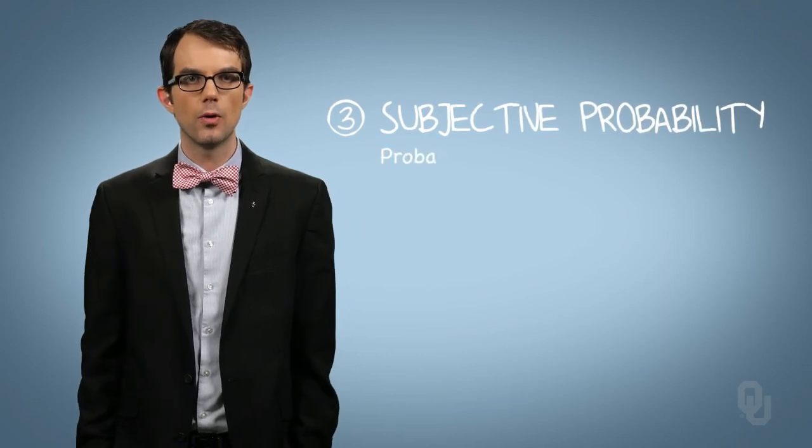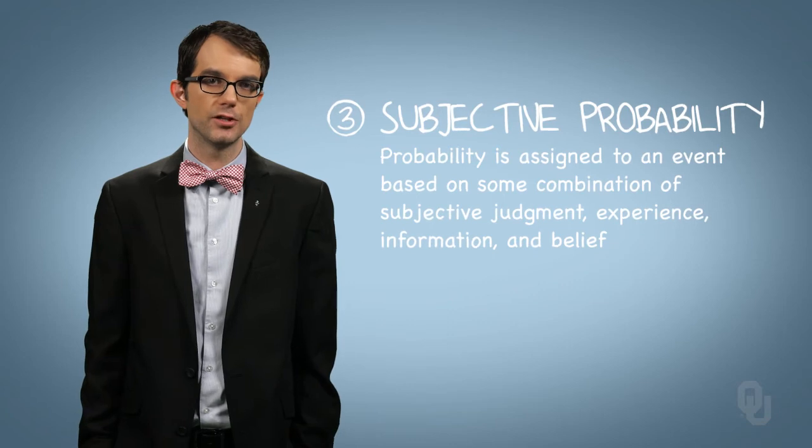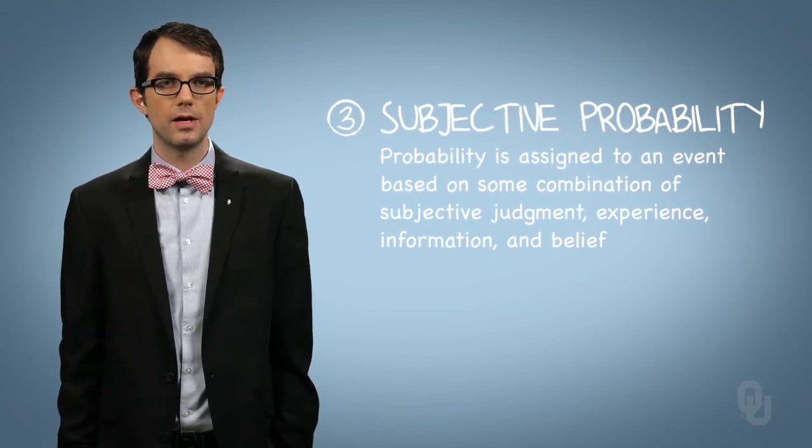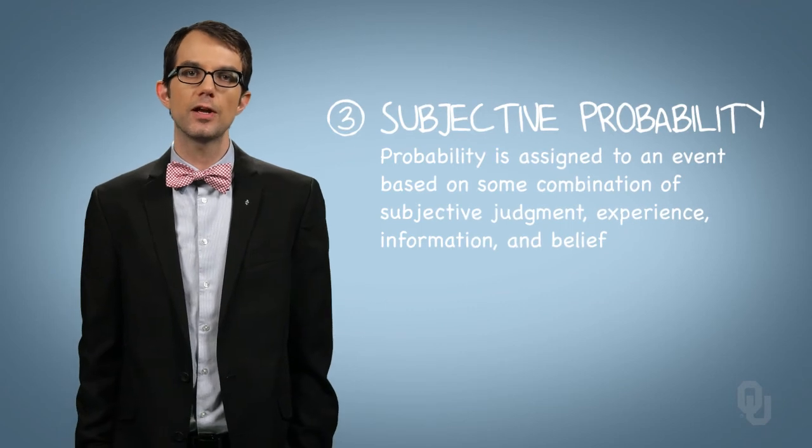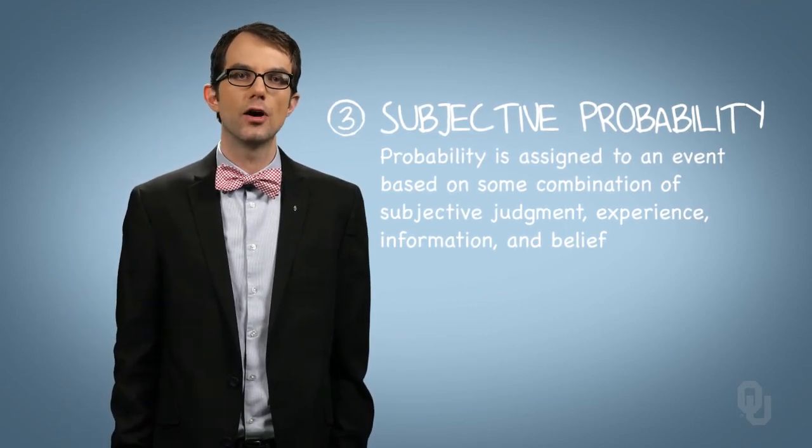The third view of probability is subjective probability, where a probability is assigned to an event based on some combination of subjective judgment, experience, information, and belief. Here, the calculation of probability frequently involves experiments that cannot be repeated and don't have a finite and known set of outcomes.